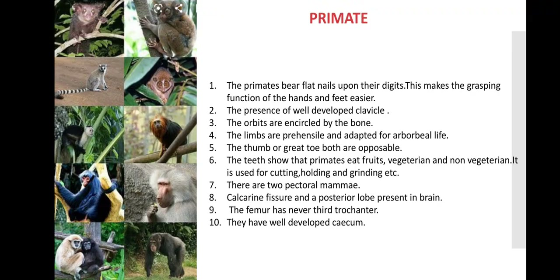What are primates? There are some features which I have explained in this video. Primates have flat nails upon their digits, which makes the grasping function of the hands and feet easier. There is a presence of a well-developed clavicle and the orbits are encircled by the bones. The limbs are prehensile, meaning they have the capacity to hold something. The tail also has the capacity to hold something. They are prehensile and adapted for arboreal life. Arboreal means animals that live on trees.